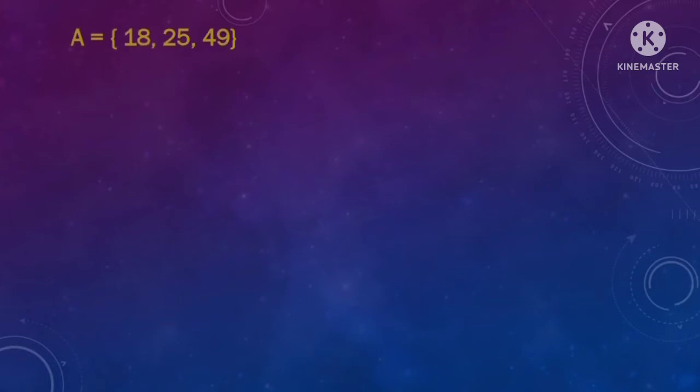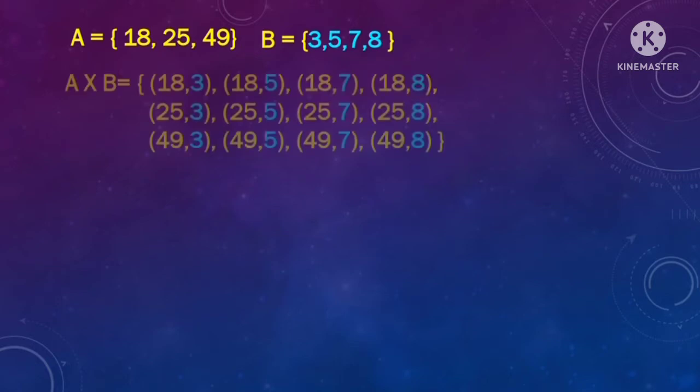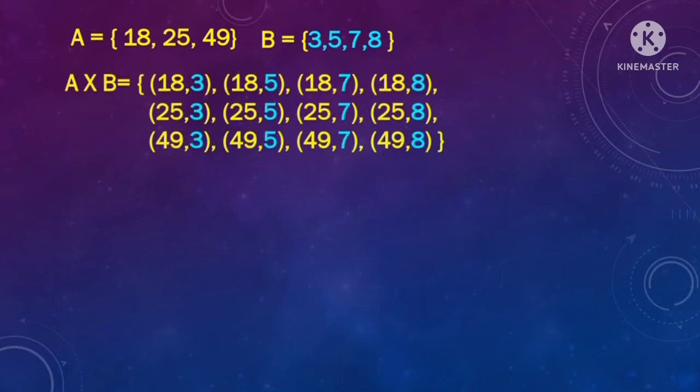Here I have set A with the elements 18, 25, and 49, and set B with 3, 5, 7, and 8. Here is the Cartesian product A cross B — it's nothing but all the ordered pairs from set A and set B. Now let's see the differences.